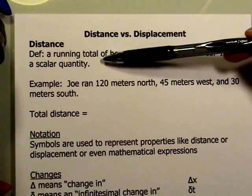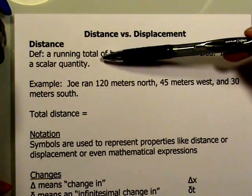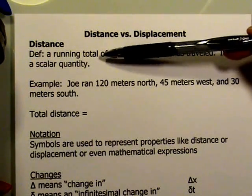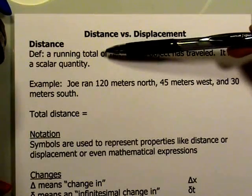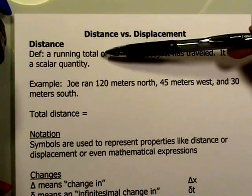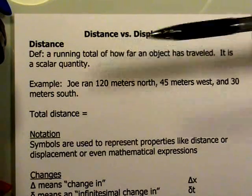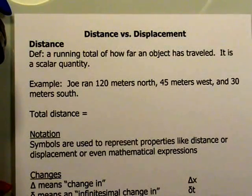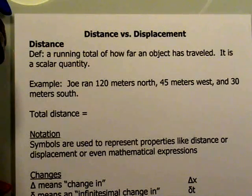Distance just continues to add no matter which direction you go — forward, backwards, up, down, left, right — it makes no difference. It just continues to always add. So in a sense, it is always a positive quantity.